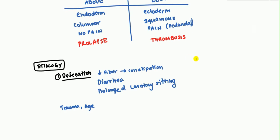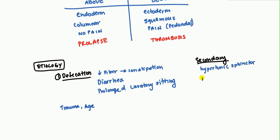Besides defecation, there are secondary causes. A hypertonic sphincter makes patients push harder while defecating, causing increased abdominal pressure and engorgement of those anal vessels. Pregnancy also causes increased abdominal pressure. And portal hypertension — often caused by liver cirrhosis — leads to backup flow, and can also cause esophageal varices, anal varices, and even umbilical varices.